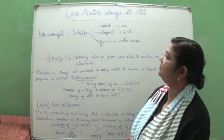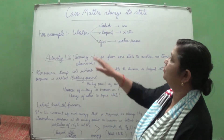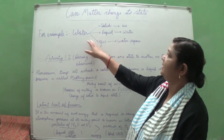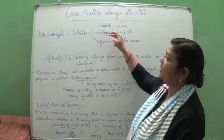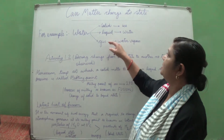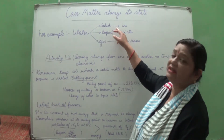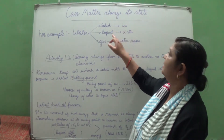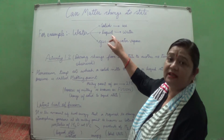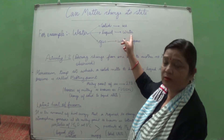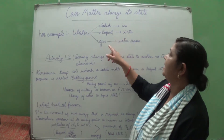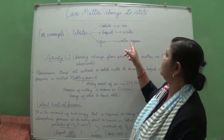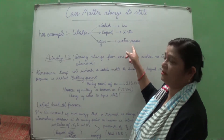For example, if we take water: in its solid form it exists as ice, in liquid form it exists as water, and in gaseous form it exists as water vapor.